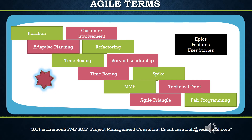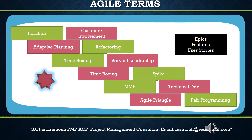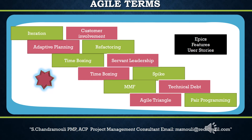Tenth, technical debt: technical debt is the total amount of less-than-perfect design and implementation decisions in an agile project. It is a known technical problem in the code. As technical debt decreases, the velocity — the number of story points completed per iteration — will start to rise again. A good rule of thumb in agile projects is to spend 10% of the iteration on addressing technical debt.